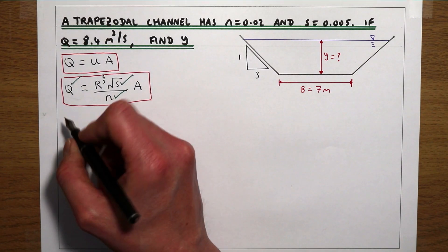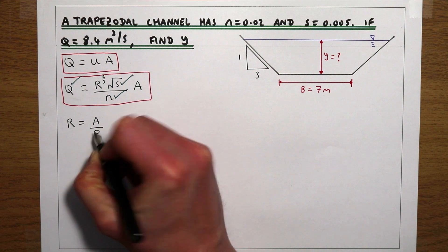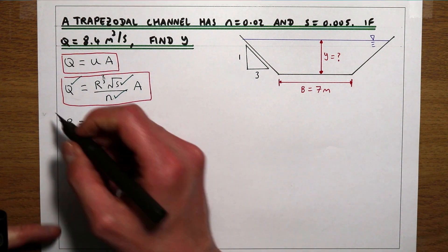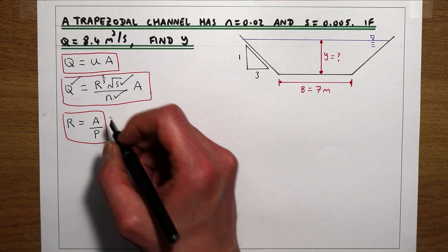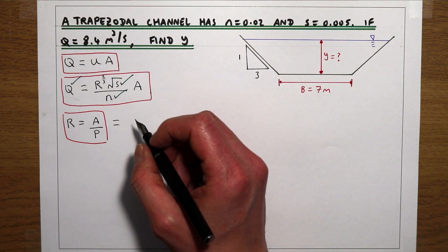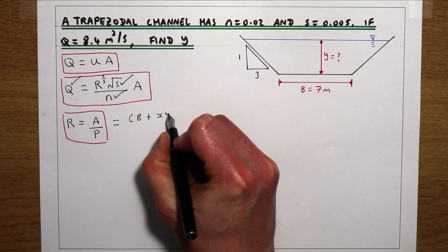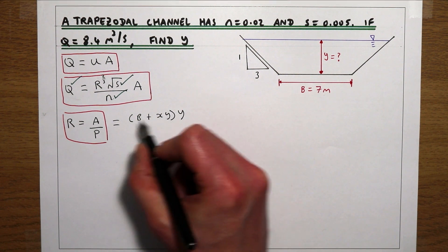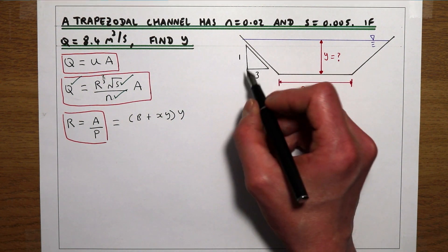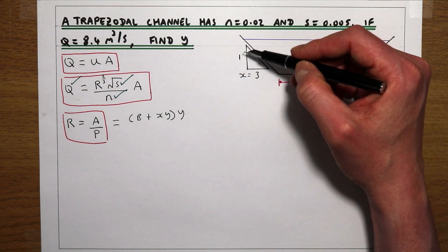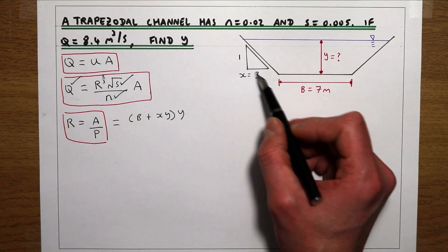The hydraulic radius is defined as the area of flow divided by the wetted perimeter. For a trapezoidal section, the area is (B + XY) × Y, where Y is the flow depth, B is the base width, and X relates to the side slope gradient. For a 1-in-3 side slope, X equals 3, meaning for every 1 unit vertically we move 3 units horizontally.